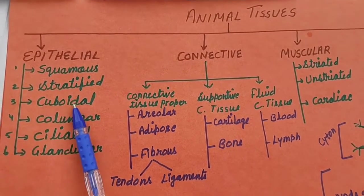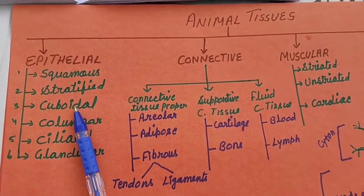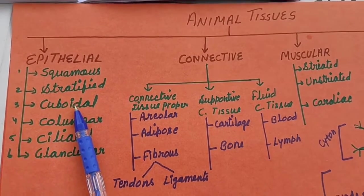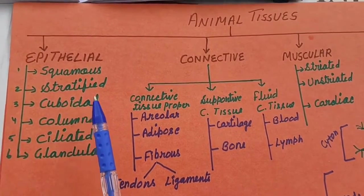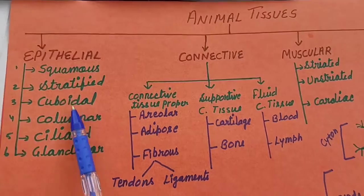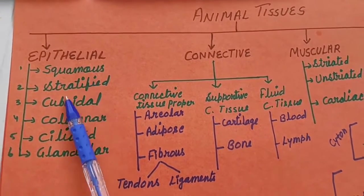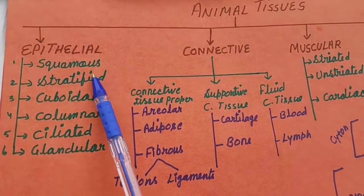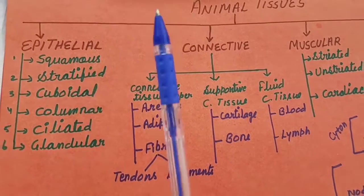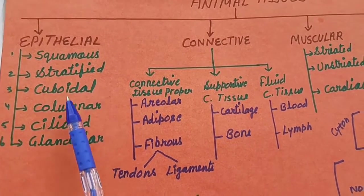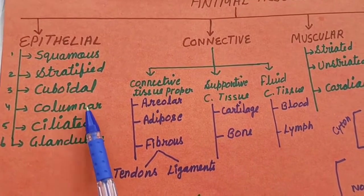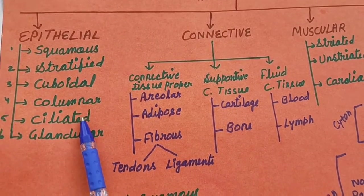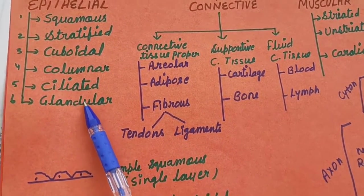And what about shape? Epithelial cells may be flat, may be cuboidal or may be columnar in shape. Epithelial tissues are of 6 types: squamous, stratified, cuboidal, columnar, ciliated and glandular.